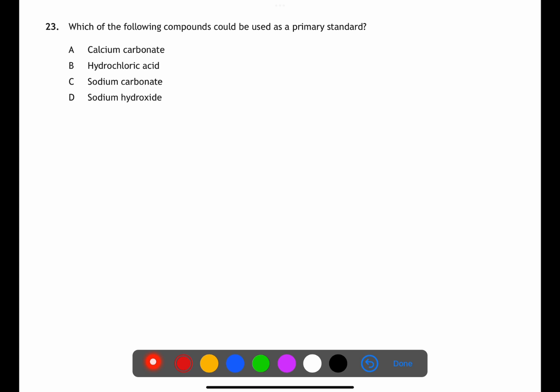For question 23 we're looking for something which could be used as a primary standard. They must be highly soluble, highly pure, have a high GFM, and have high stability in air and water and not absorb water. Calcium carbonate is not a primary standard as it is insoluble. Hydrochloric acid cannot be a primary standard as it is already in solution. Sodium carbonate would make a good primary standard. Sodium hydroxide cannot be used as it is not stable in air or water and absorbs water.